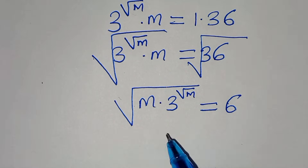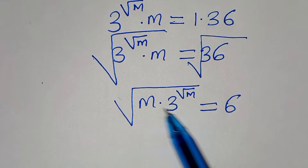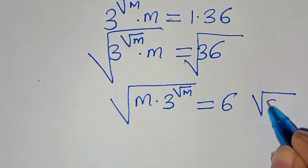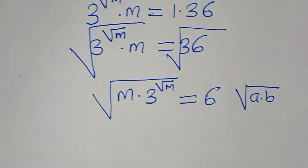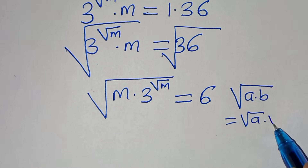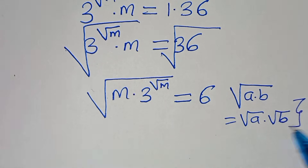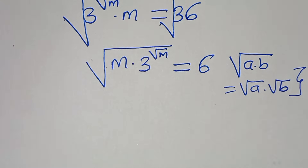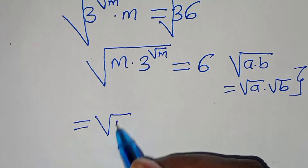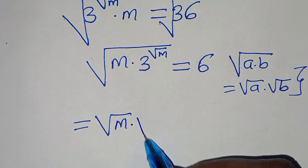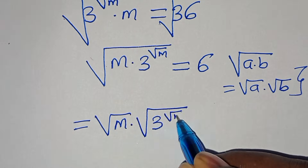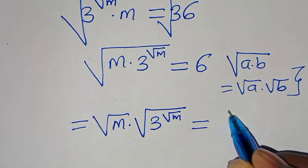The next step: square root of m times 3 raised to the power of square root of m is in the form of square root of (a multiplied by b), which we can express as square root of a times square root of b. Applying this property, we have square root of m multiplied by square root of 3 raised to the power of square root of m, equal to 6.